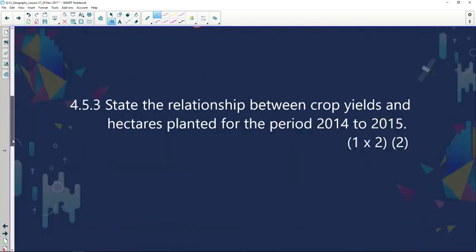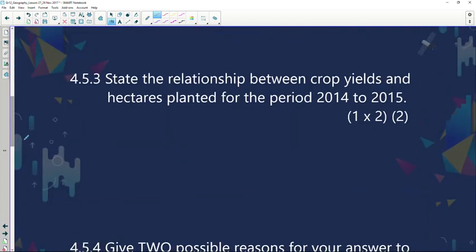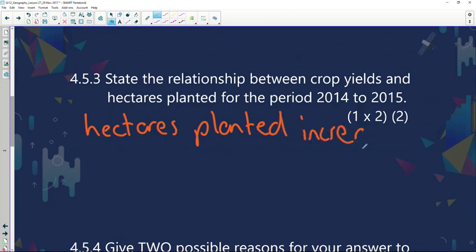Now if you look at our next question, state the relationship between crop yields and hectares planted for the period 2014 to 2015. Now we just looked at it. All of a sudden in 2015 there was more land being used but less was yielded than in 2014. So we can say the hectares planted increased but the crop yield decreased.